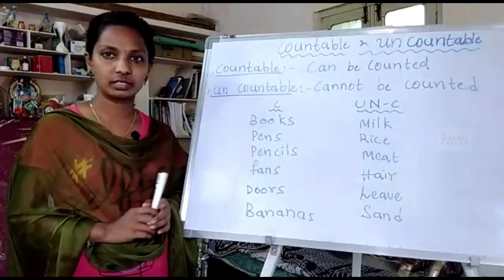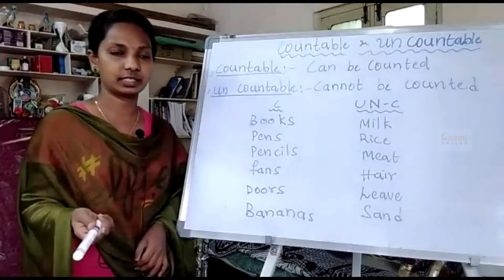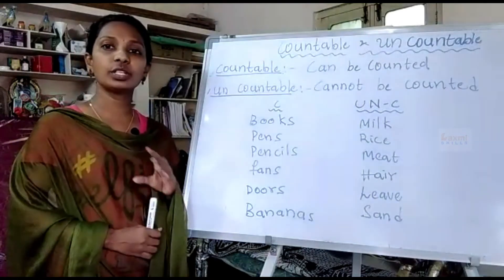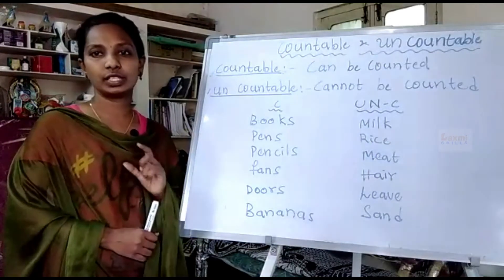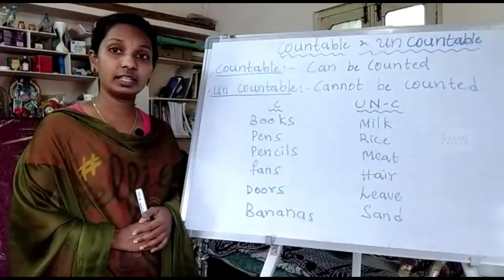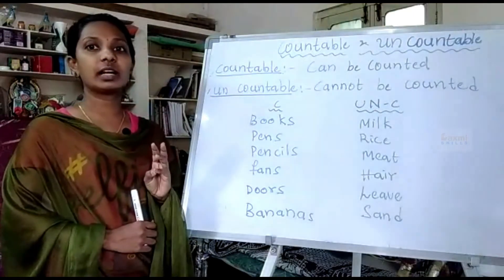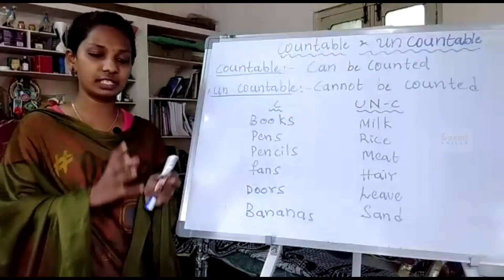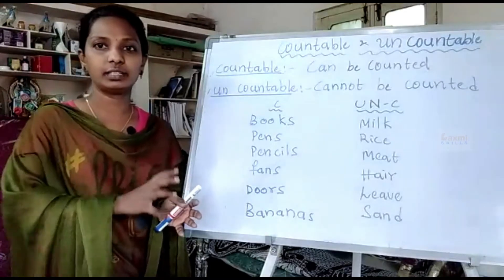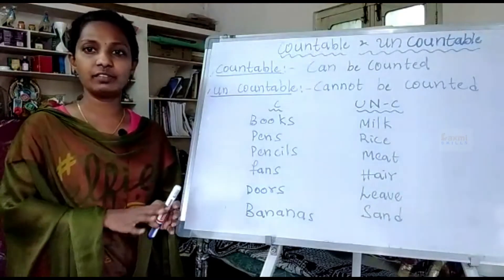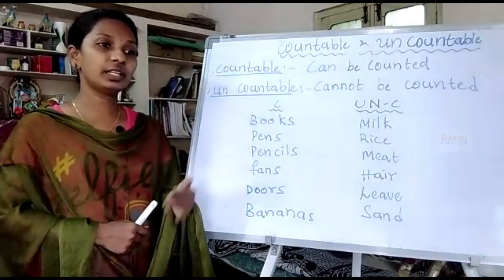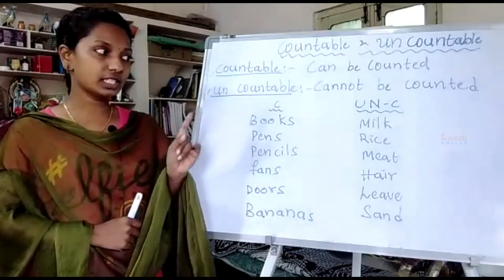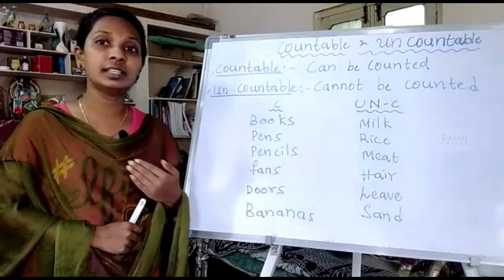Books are countable — 10 books, 12 books. For uncountable, take milk: milk is measured only through quantity, like one liter or two liters. We never say 'give me 10 drops of milk'; we always say 'a packet of milk.' Drops can be counted but liters are not counted individually, so liquids cannot be in the list of countables.